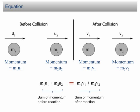Then the sum of momentum before the collision will be m1u1 plus m2u2, while the sum of momentum after the collision is m1v1 plus m2v2.